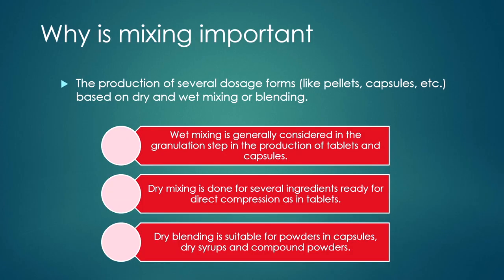There are two types of mixing or blending: wet mixing and dry mixing or dry blending. Wet mixing is generally used in the granulation step where you need to produce tablets or capsules. Dry mixing is done for several ingredients readily used for direct compression in tablets. Dry blending is also suitable for powders in capsules, dry syrups, and compound powders. The production of several dosage forms — tablets, capsules, etc. — is based on either dry or wet mixing.